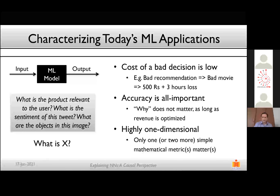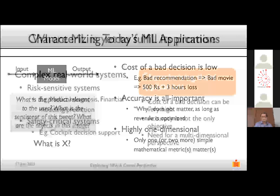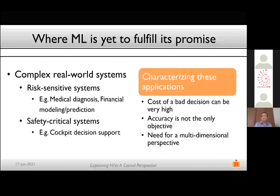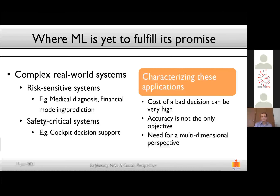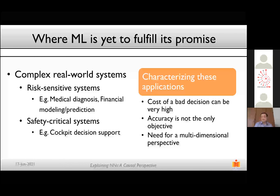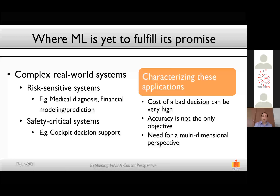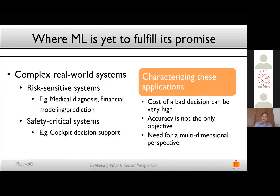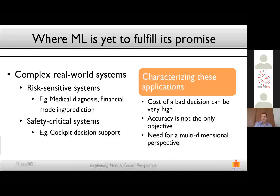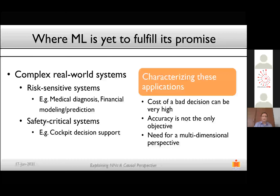This leads to a very one-dimensional way of measuring ML model performance. The obvious question then is: what do we really want? There are complex, real-world, risk-sensitive systems — medical diagnosis, financial modeling, safety-critical systems like cockpit decision support — where the cost of a bad decision can be very high, potentially resulting in fatalities. Machine learning may be used in subsystems but not for final decision-making in these applications.